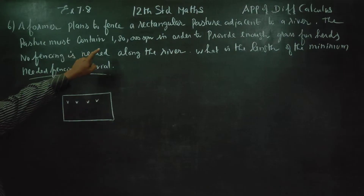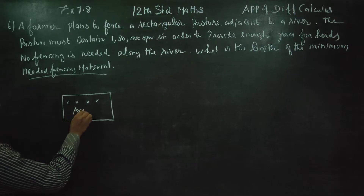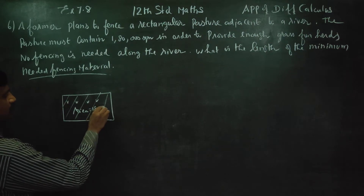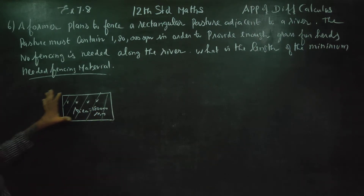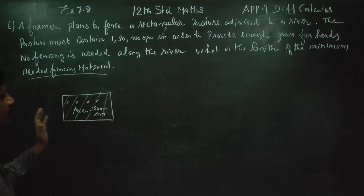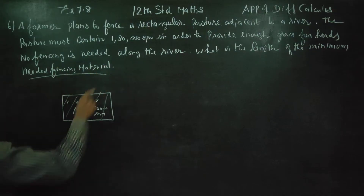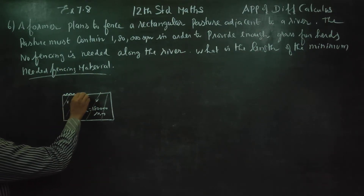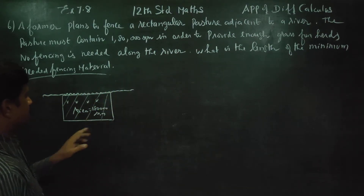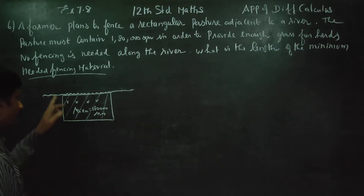The pasture must contain 1,80,000 square meters. This area is 1,80,000 square meters. In order to provide enough grass for the herds, no fencing is needed along the river. What is the length of the minimum needed fencing material?